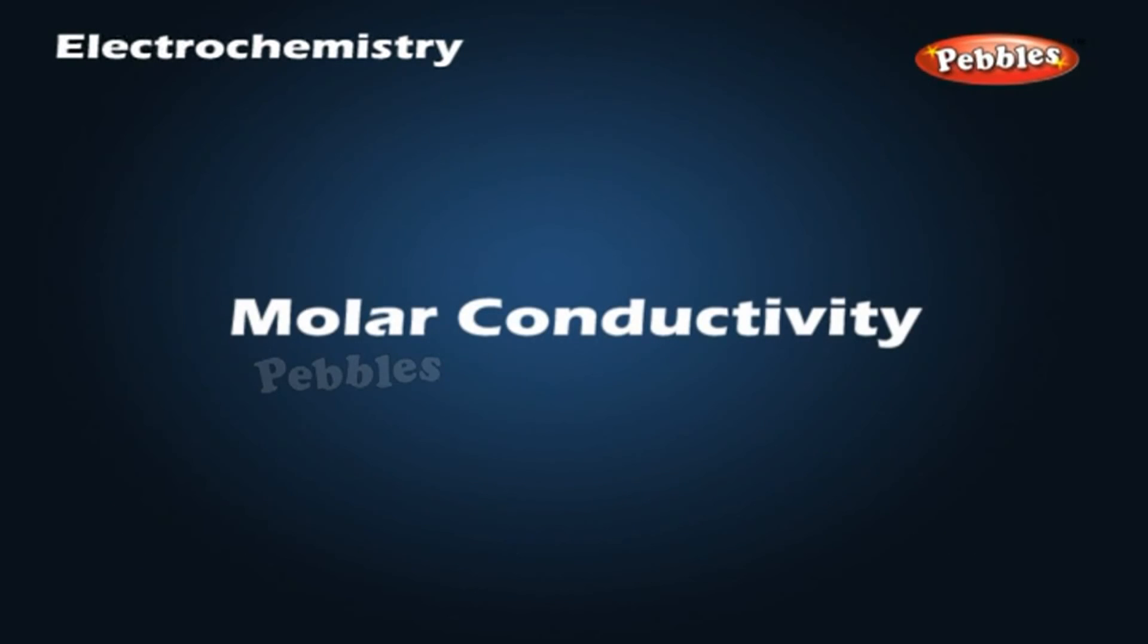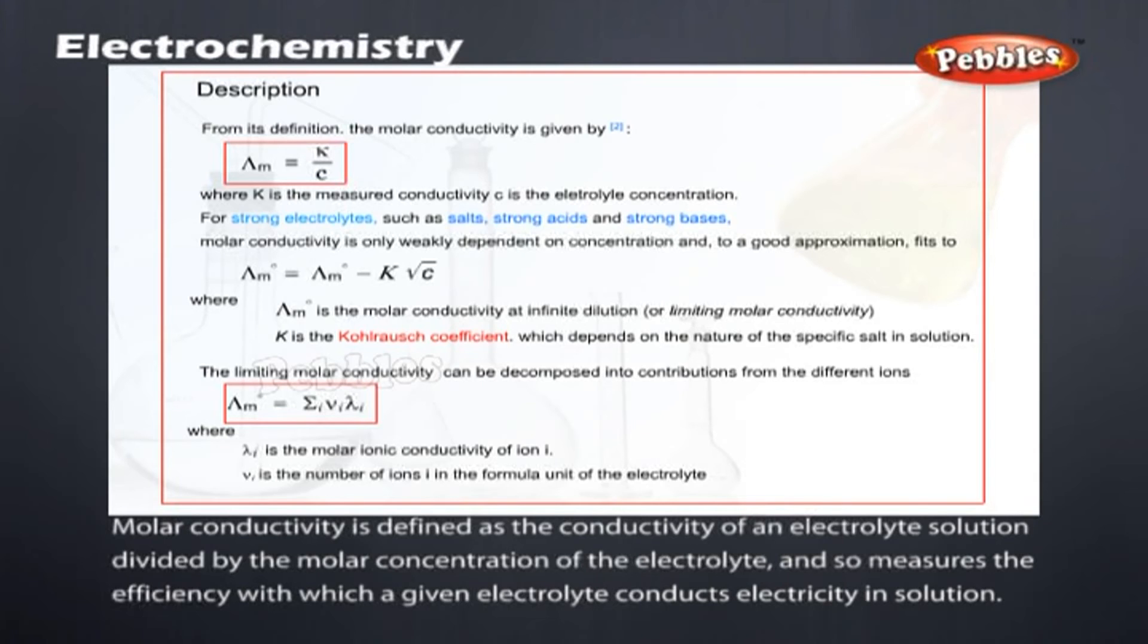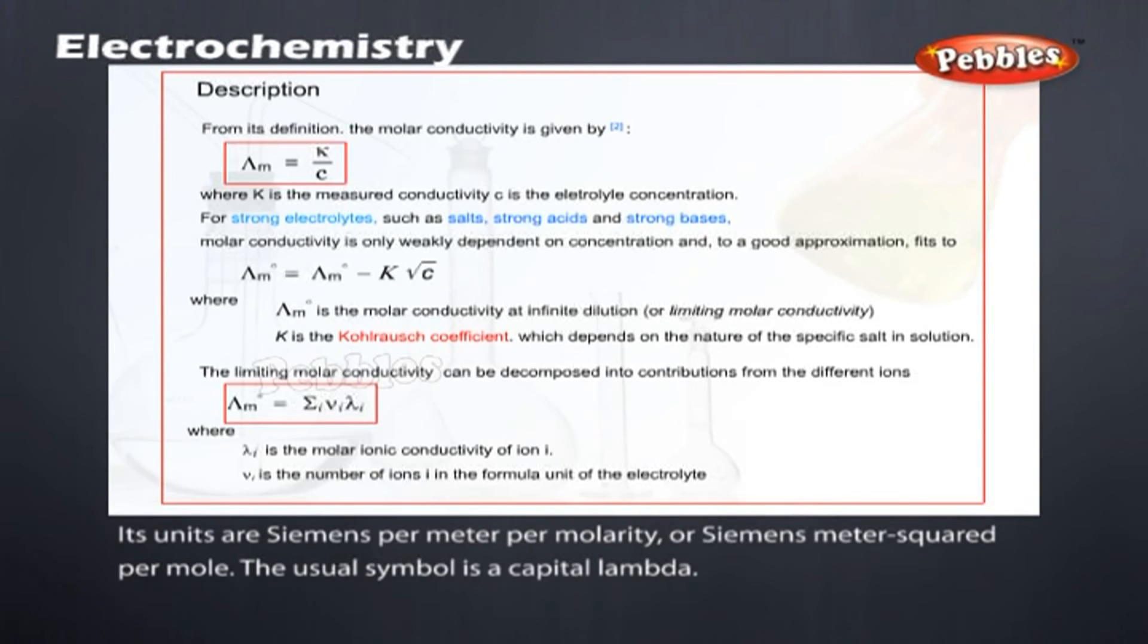Molar conductivity. Molar conductivity is defined as the conductivity of an electrolyte solution divided by the molar concentration of the electrolyte and so measures the efficiency with which a given electrolyte conducts electricity in solution. Its units are siemens per meter per molarity or siemens meter squared per mole. The usual symbol is a capital lambda.